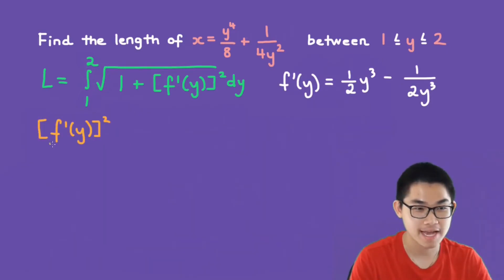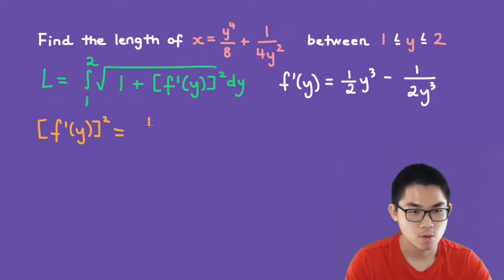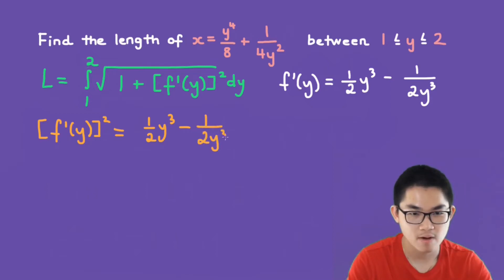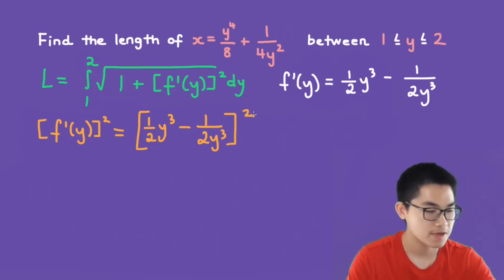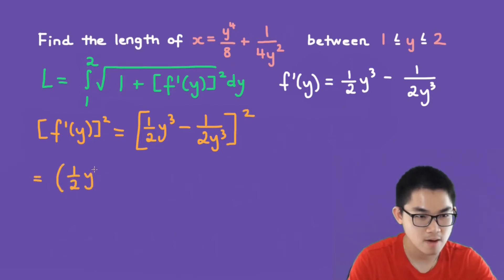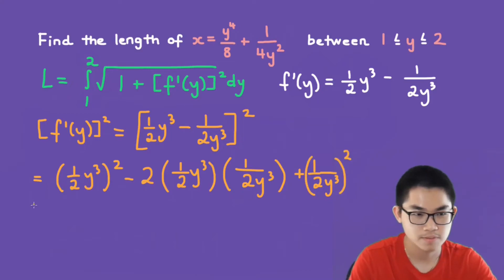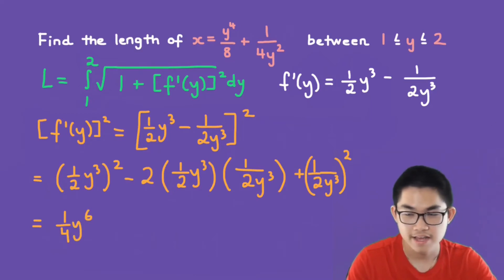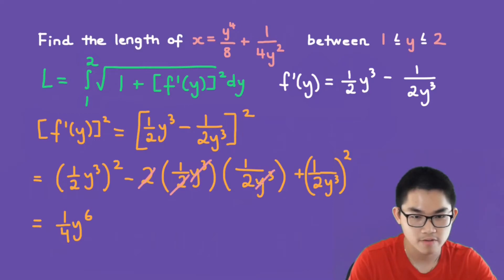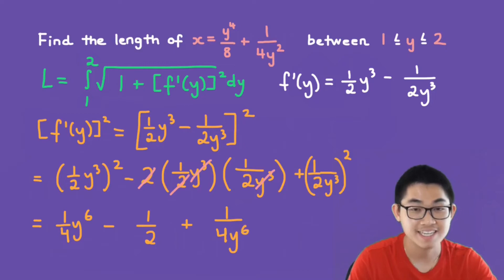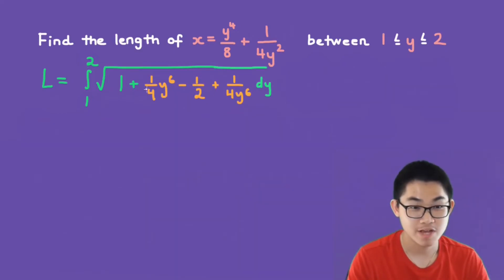Now let's find f prime of y to the power of 2. This equals (1 over 2 times y cubed minus 1 over 2 times y to the power of negative 3) squared, which expands to 1 over 4 y to the power of 6 minus 1 over 2 plus 1 over 4 times y to the power of negative 6. Substituting back into the equation, 1 plus this expression gives us 1 plus 1 over 4 y to the power of 6 plus 1 over 2 plus 1 over 4 y to the power of negative 6, since 1 minus 1 over 2 equals positive 1 over 2.